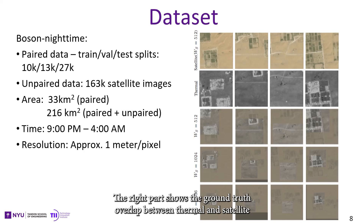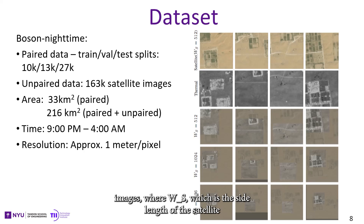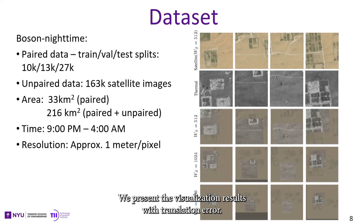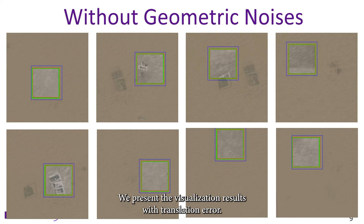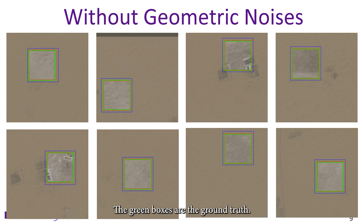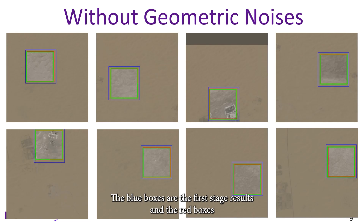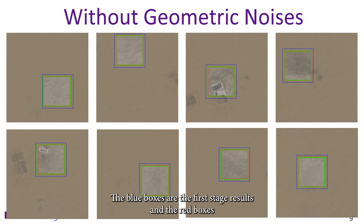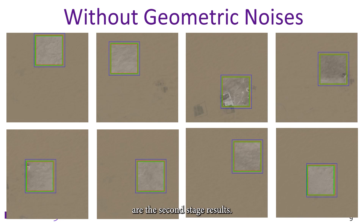The right part shows the ground-truth overlap between thermal and satellite images when WS — the side length of the satellite image — changes from 512 to 1536. We present the visualization result with translation. The green boxes are the ground-truth, the blue boxes are the first-stage result, and the red boxes are the second-stage result.